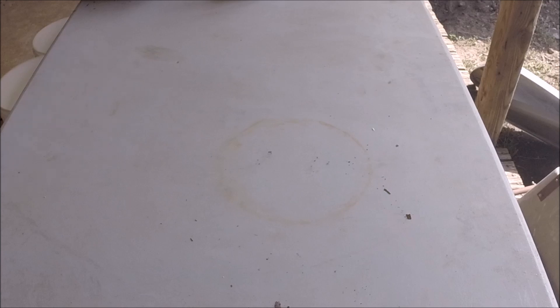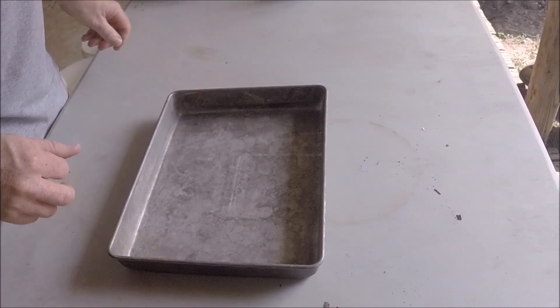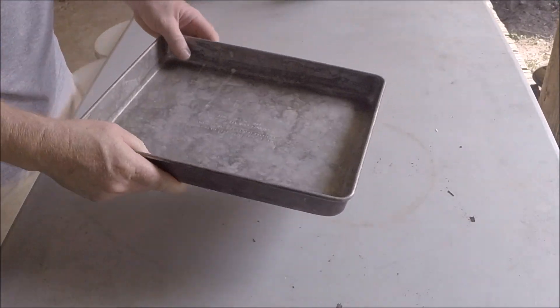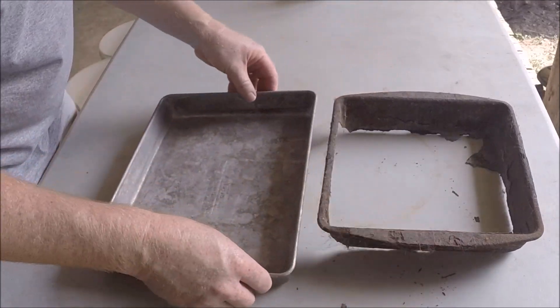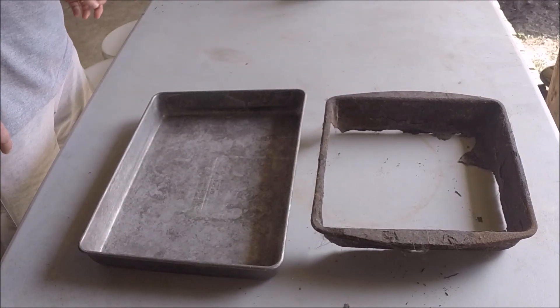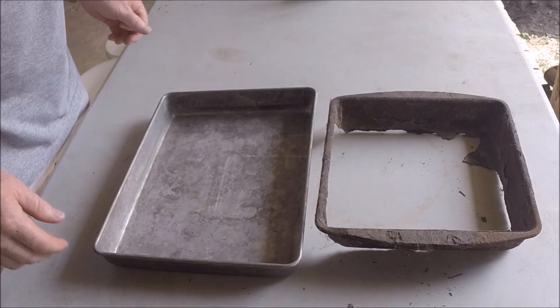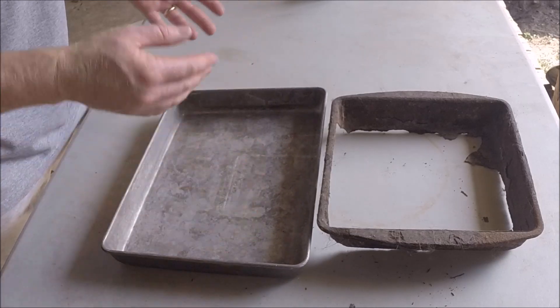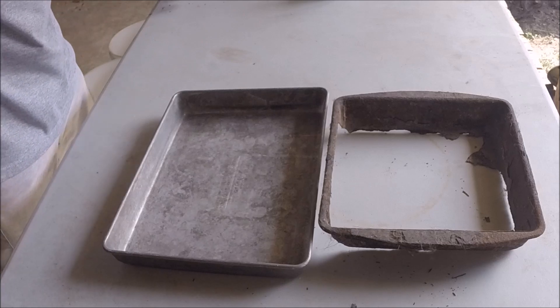Another example of a chemical change that you may have seen is rusting. Here's a steel pan that you cook stuff in. And here's an example of a similar steel pan, except this one's been left outside and it has rusted. Rusting occurs when some metal that contains iron or steel is left outside and is exposed to water and oxygen over a long time.